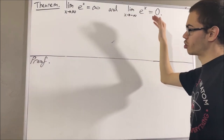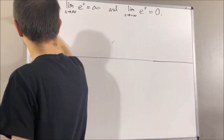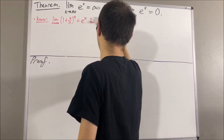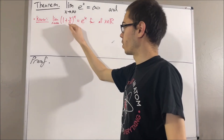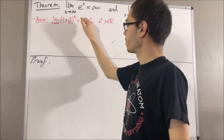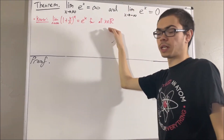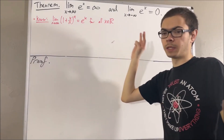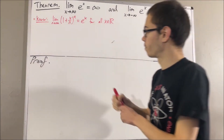First of all, let's remind ourselves what e to the x is. The limit of 1 plus x over n to the power of n is equal to e to the x for all real numbers x. And we have three properties of the exponential function that we have proven.